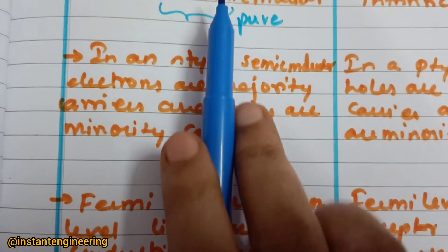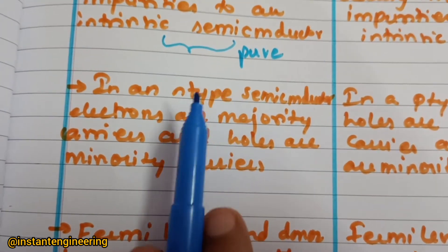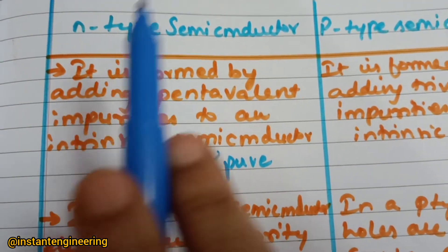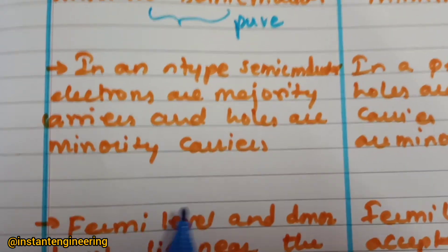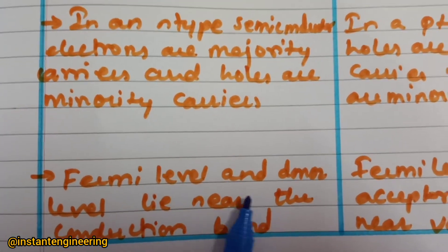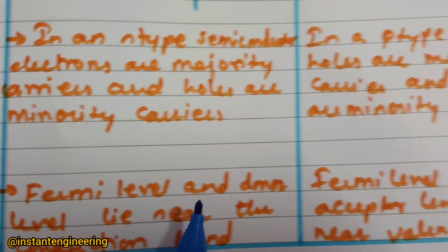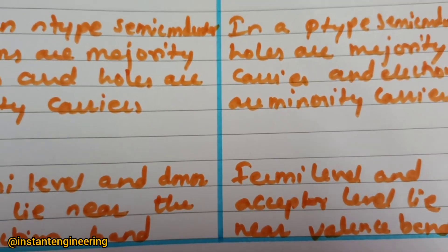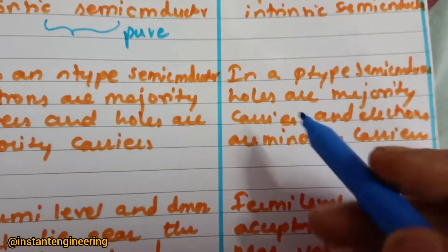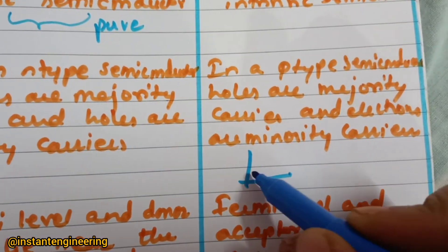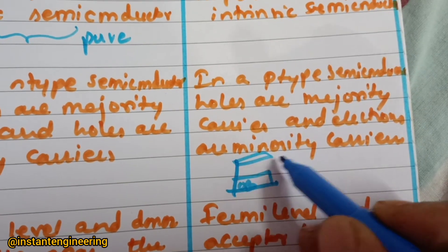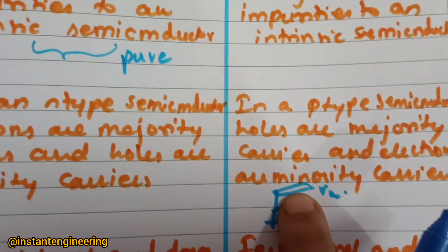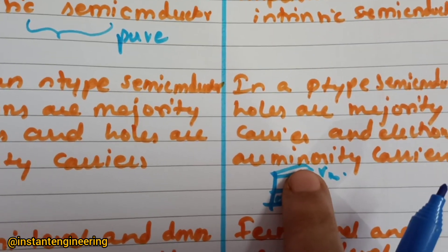The next difference involves the Fermi level. In n-type, the Fermi level and donor level lie near the conduction band. Since electrons are more, they will donate — that's why n-type is called a donor. So the donor level and the Fermi level lie near the conduction band. For p-type, the Fermi level and acceptor level lie near the valence band.